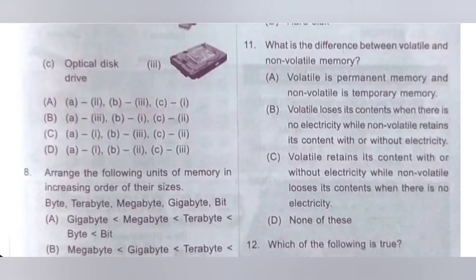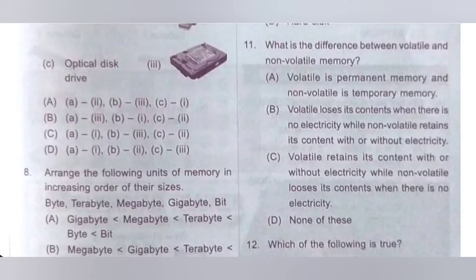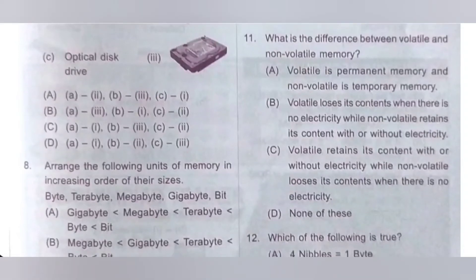Eleventh question. What is the difference between volatile and non-volatile memory? Option B states: volatile loses its contents when there is no electricity, while non-volatile retains its contents with or without electricity. Volatile memory loses its contents when there is no electricity — example is RAM. Non-volatile memory retains its content with or without electricity — examples are hard disk, CD, flash drive, etc. Option B is the correct answer.